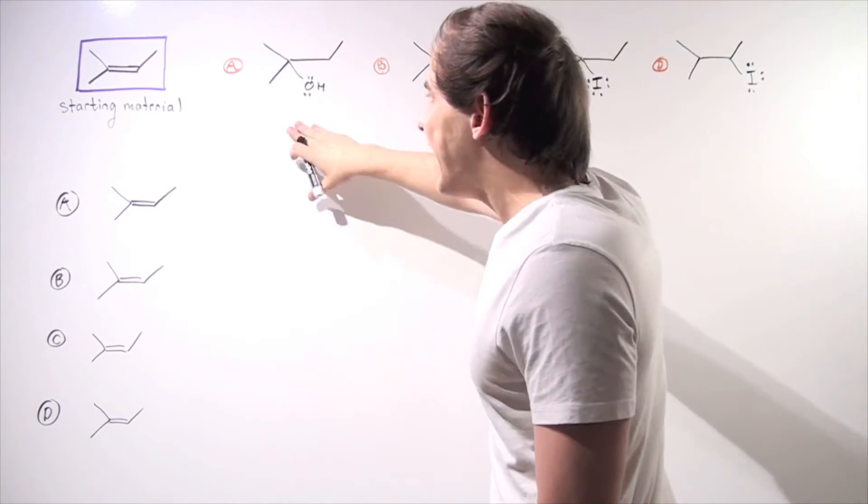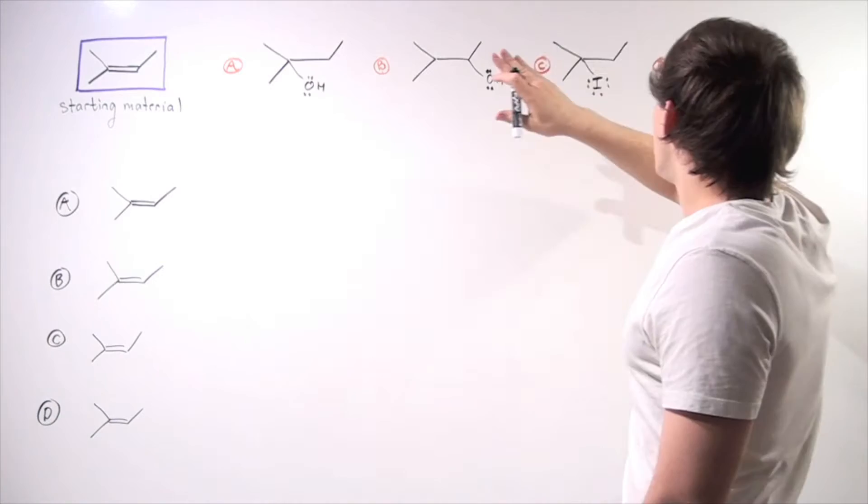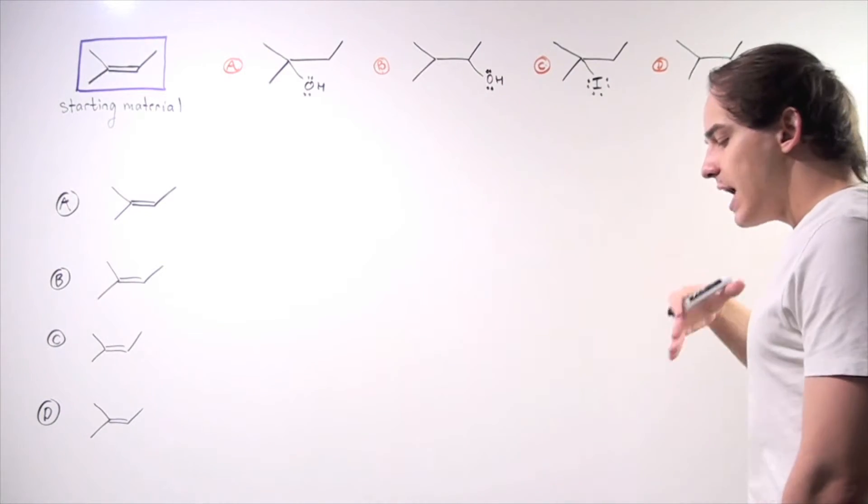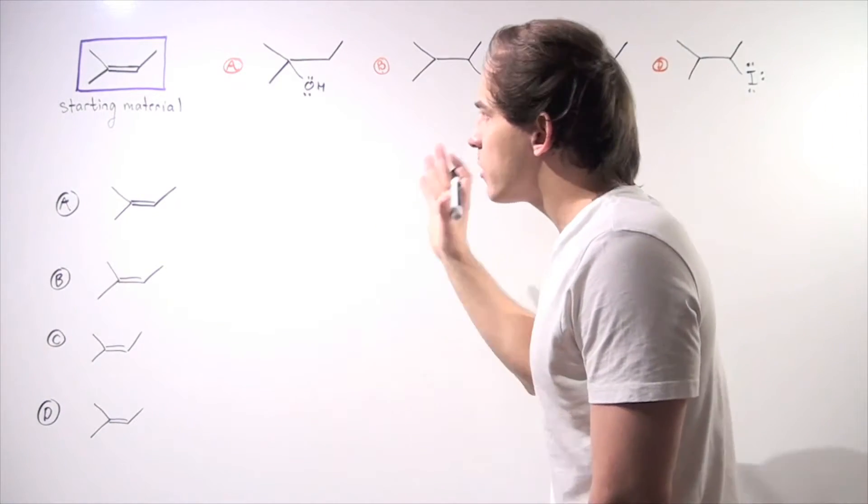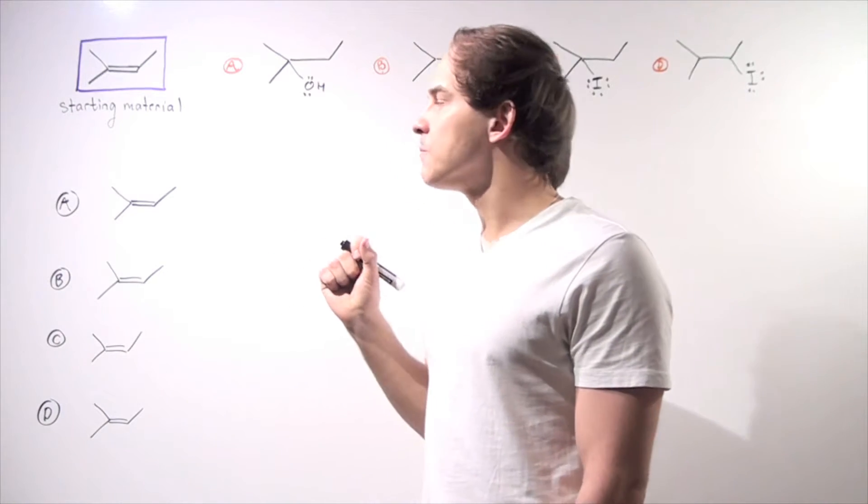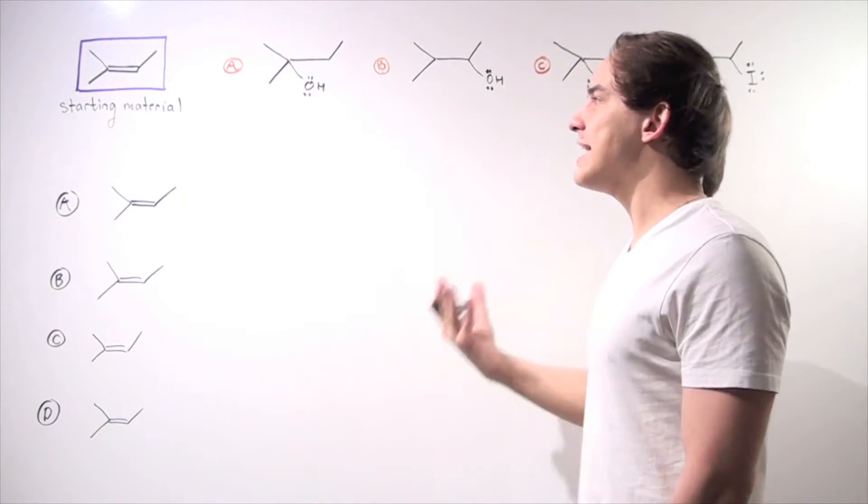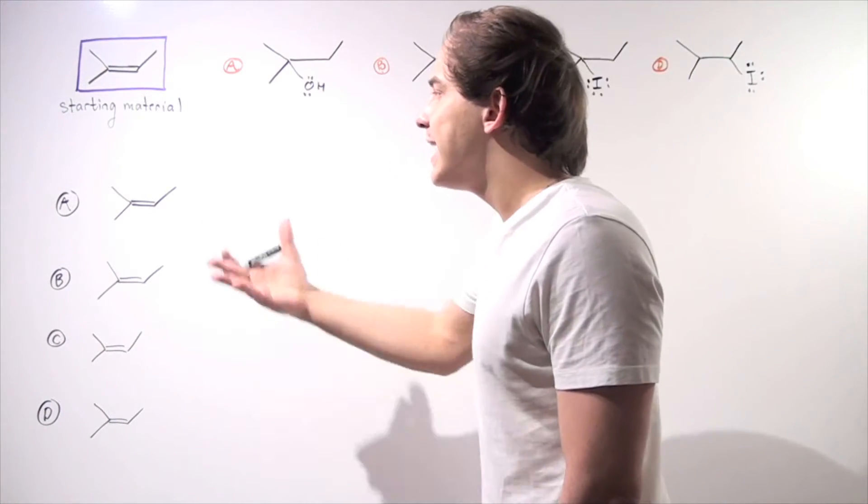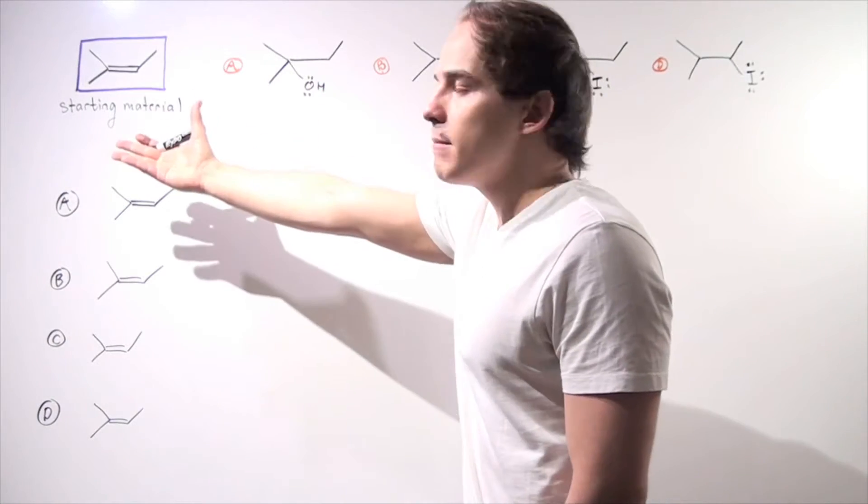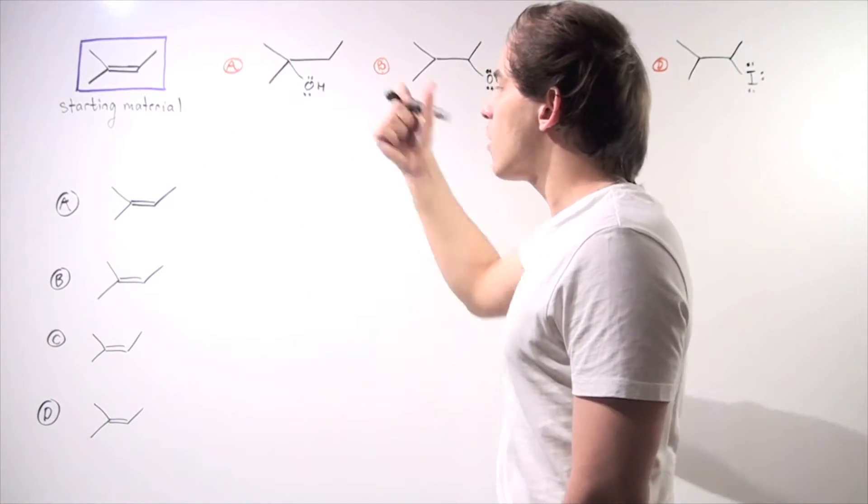So we want to produce product A from that, product B, product C, and product D. Now we're not going to worry too much with the mechanism in this lecture, we'll just worry about the reagents that we need to add in order to take us from our starting material to our product.